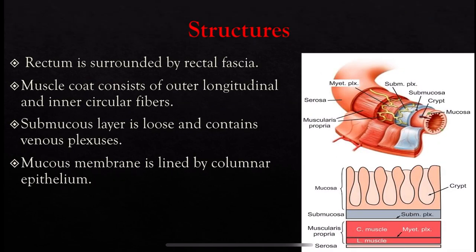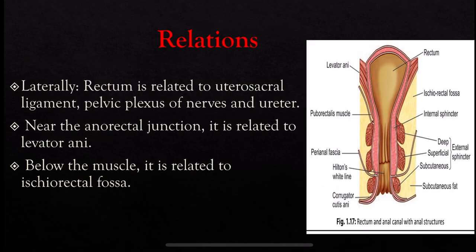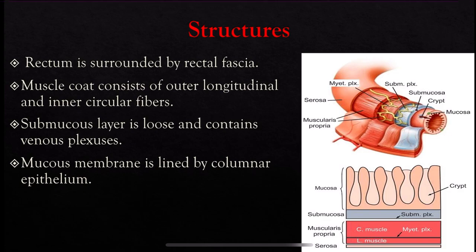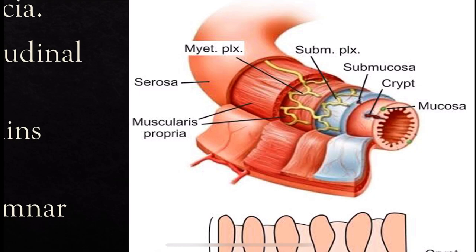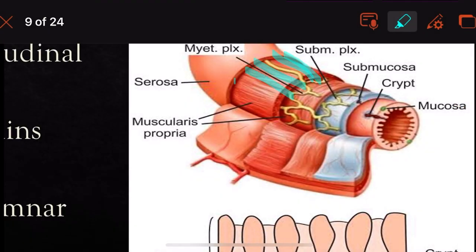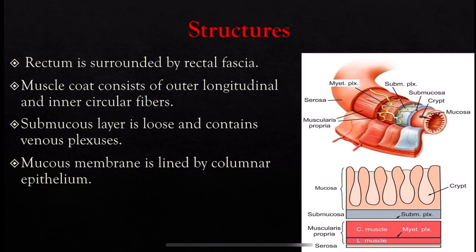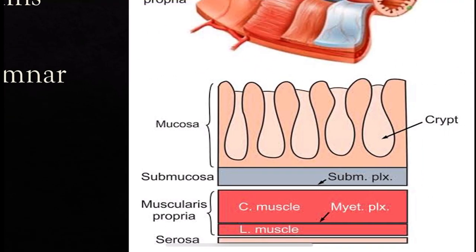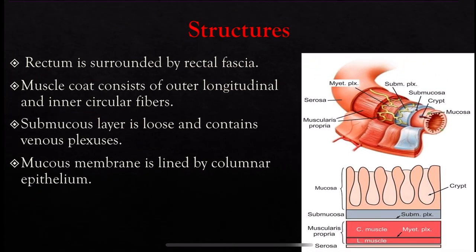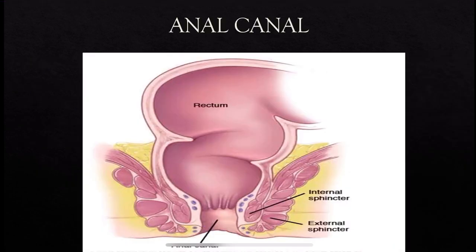The rectum is surrounded by the rectal fascia. The muscle coat contains the outer longitudinal and the inner circular fibers. The submucous layer contains the venous plexus and nerve plexus. The mucous membrane is lined by columnar epithelium.